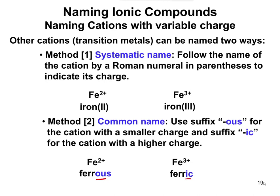We're not going to worry about the common name — just focus on the systematic name. In that case, you name the metal and then indicate the charge with a Roman numeral in parentheses right after it. For example: copper(I), copper(II), chromium(II), chromium(III), tin(II), tin(IV).